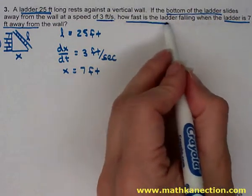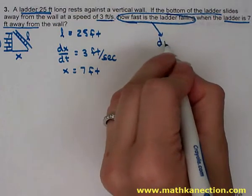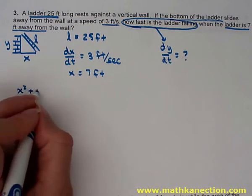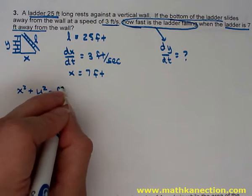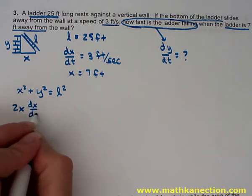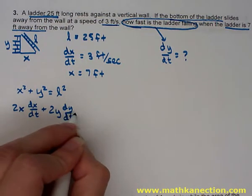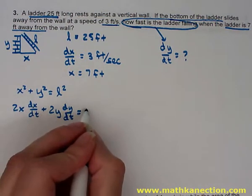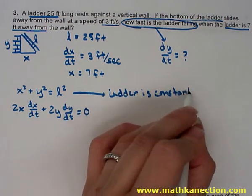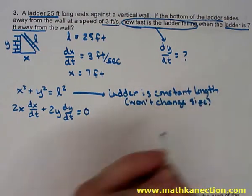The question asks how fast the ladder is falling. Labeling the height as y, we are looking for dy/dt, the rate at which the height is decreasing. Using the Pythagorean theorem, x² + y² = L² is our equation. Differentiating with respect to time gives 2x(dx/dt) + 2y(dy/dt) = 0. The derivative of the ladder with respect to time is 0 since the length of the ladder is constant — the ladder does not change in size.